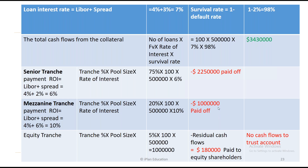Equity tranche: attachment point 5% × 100 × $500,000 = $2,500,000 principal. After paying senior and mezzanine, only $180,000 remains. Since this is the final year, this goes to equity shareholders with no cash flows to the trust account. Otherwise, if stipulated, cash flows go to the trust account first, and then the remaining goes to equity shareholders in an intermittent structure.